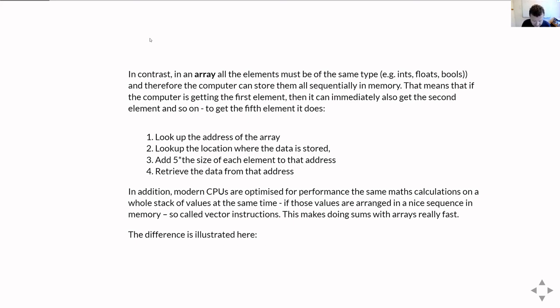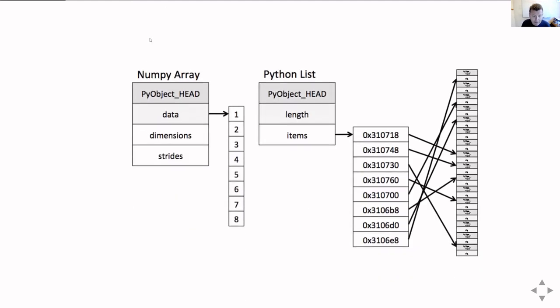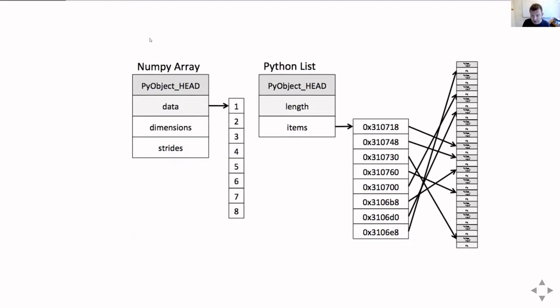So just to show you the kind of difference you can get, here's a picture. On the right hand side we have the way a Python list is organized, and you can see that we start off with the kind of thing that says this is a Python variable, and defines it's a list, and then it has a bit where it says here's the length of the list, and then it says okay you're going to find the items of our list are going to be stored in a block of memory over here.